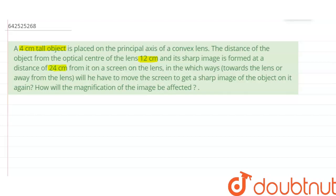This is the distance of image, which is basically V, from it on the screen on the lens. In which ways, towards the lens or away from the lens, will he have to move the screen to get a sharp image of the object on it again? How will the magnification of the image be affected?